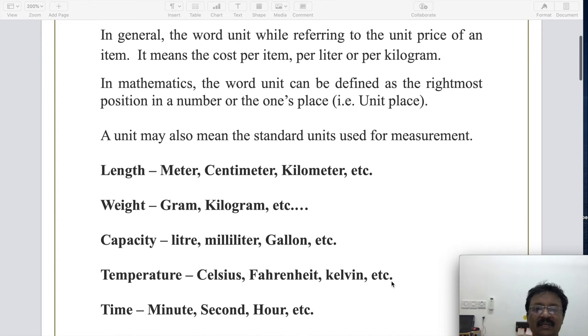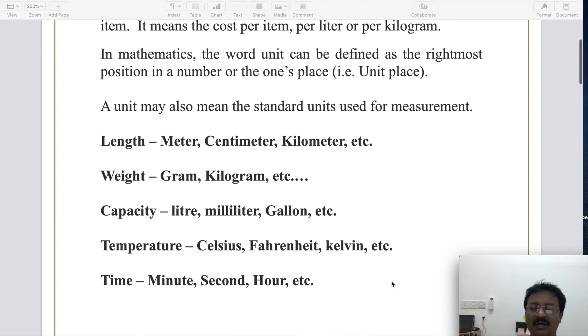Capacity. What are the units of capacity? Volume. Liters, milliliters, gallons. It's UK or we call it US measurements, gallons. Come to units of temperature. Units of temperature we are normally using Celsius and Fahrenheit. Kelvin is a laboratory unit of temperature. A unit of time: minute, second, hour.